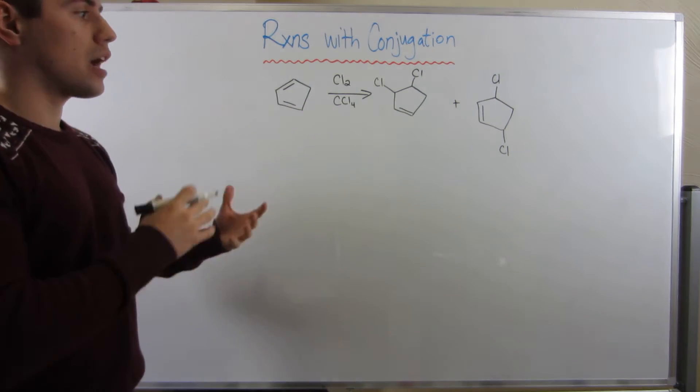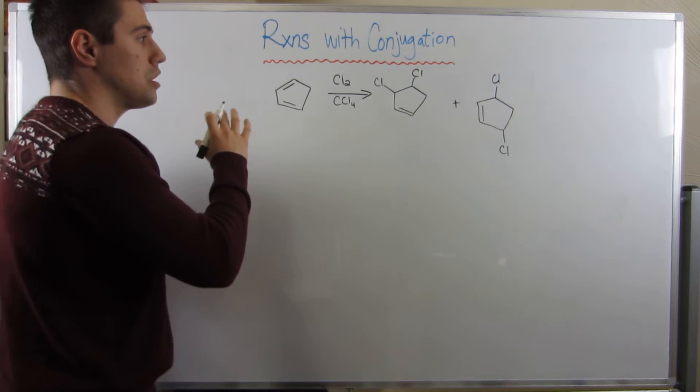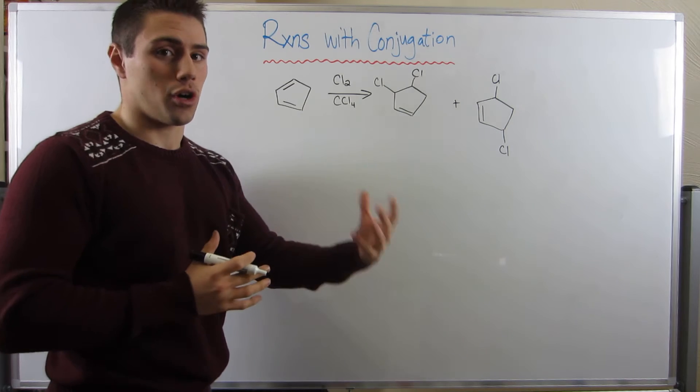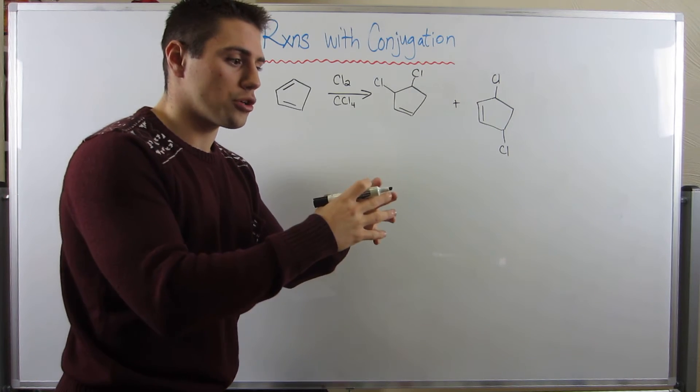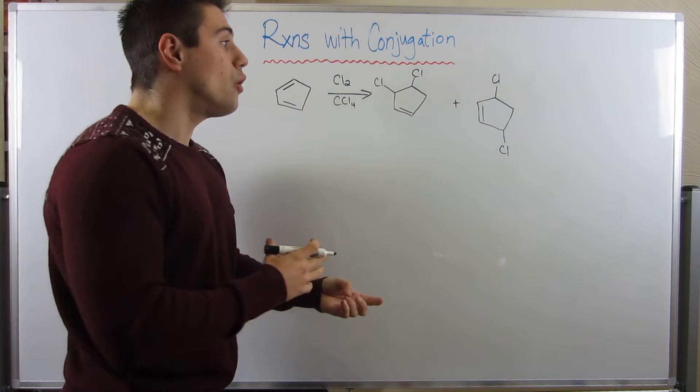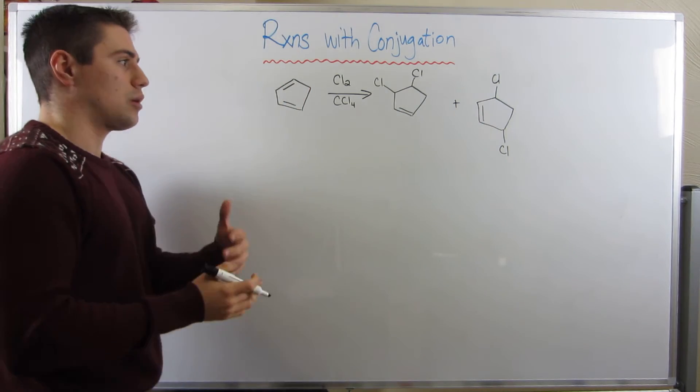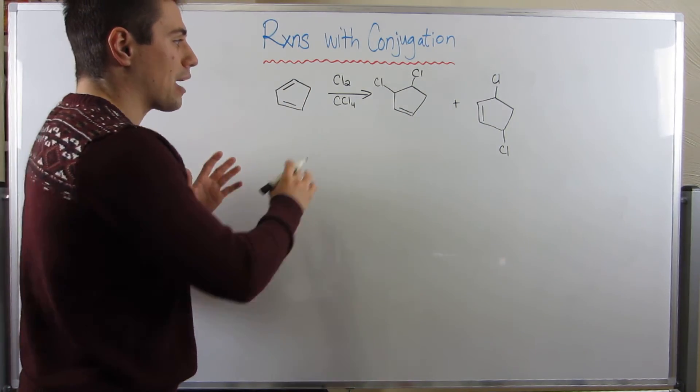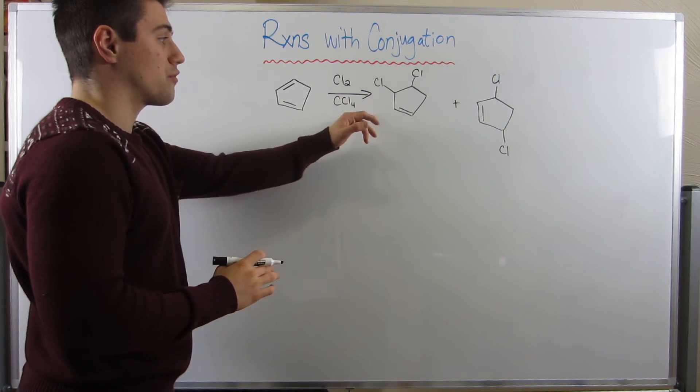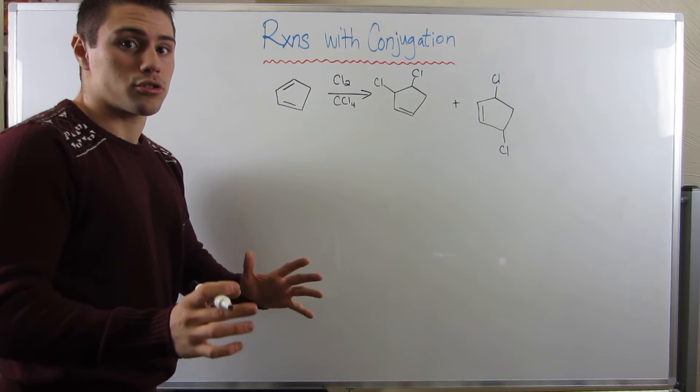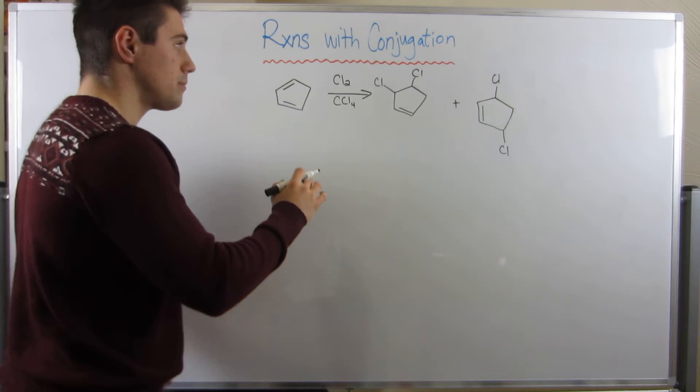So, then, here's kind of the strategy. We need to start our mechanism the way we know, and then eventually we're going to run into a charge. And once we run into that charge, we draw some resonance, and then hopefully that resonance will help us explain how these products occurred. Okay, so I'm going to start off with a little background on this reaction, because I know this is from OCHEM 1. You wouldn't have to do this on an exam, but I just want to make sure we're coming from the same place.